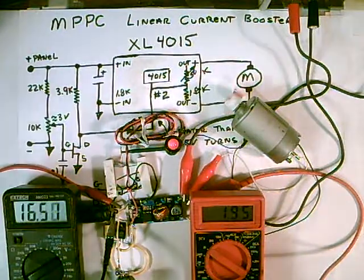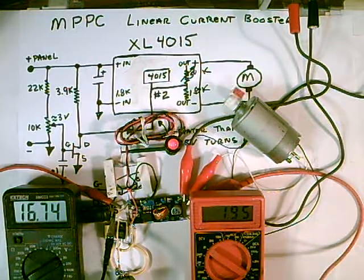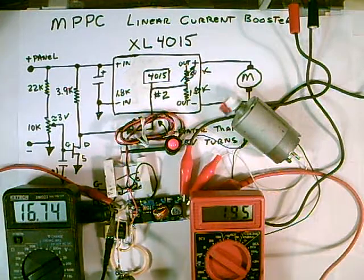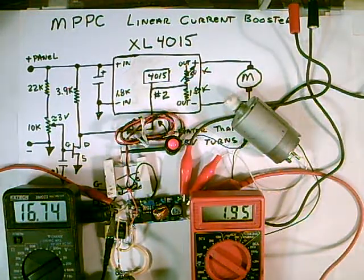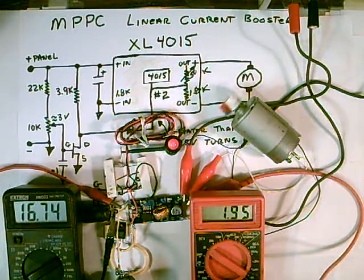I'm going to show you how to make a linear current booster for running a pump or a fan or anything else that's motorized. And this same technique can be used as a cell phone charger to get the maximum current in from a panel without putting the panel into a death spiral.